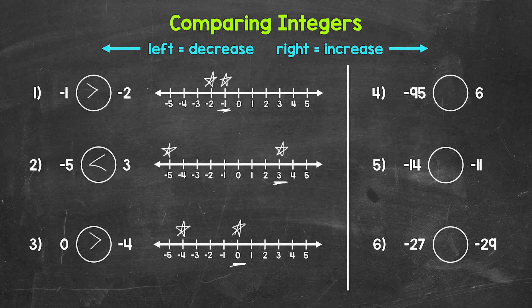Let's move on to number four, where we have: negative 95 is greater than, less than, or equal to six. We have a negative and a positive here — the positive is automatically greater than the negative. Thinking in terms of a number line, six is going to be further to the right than negative 95. So reading this from left to right, negative 95 is less than six.